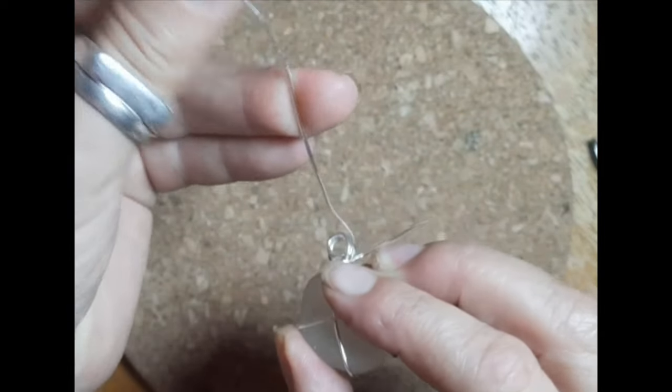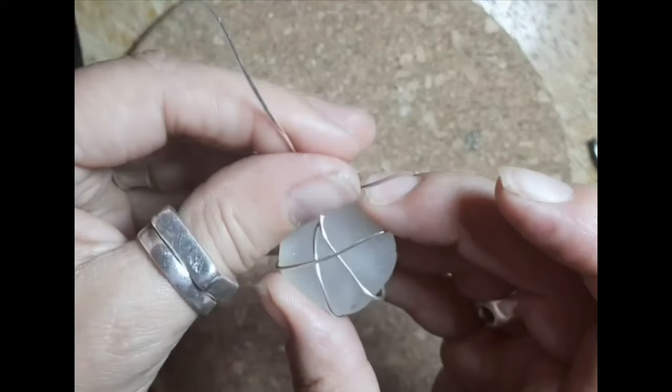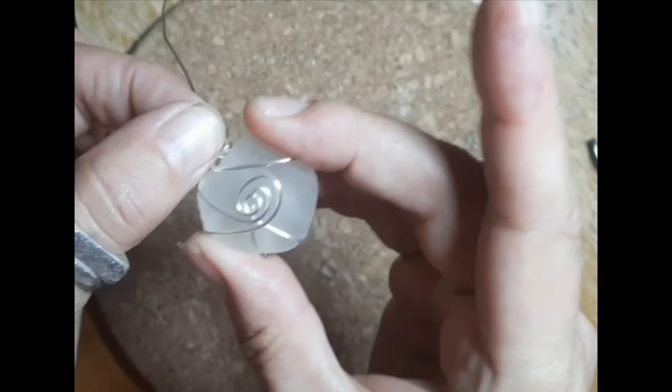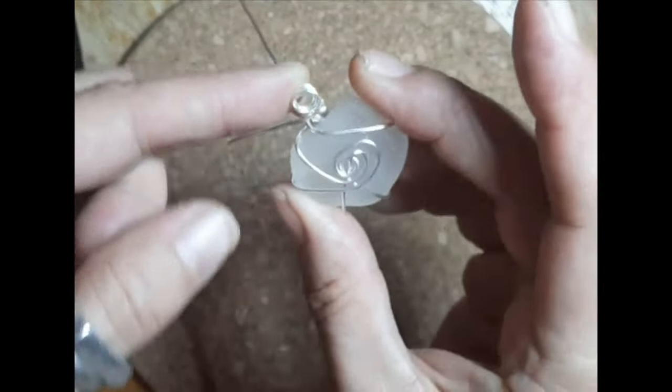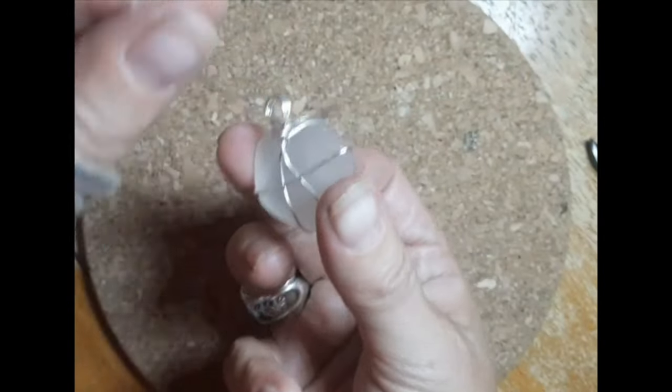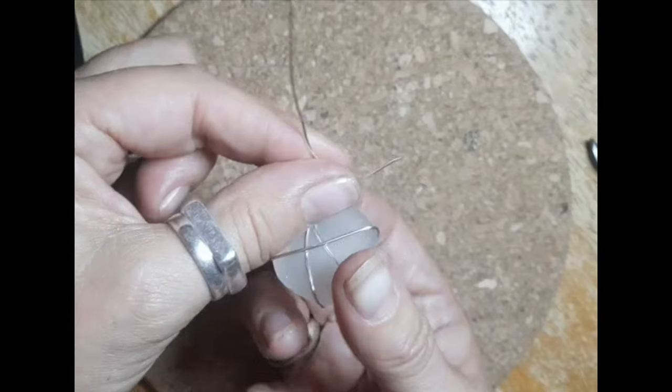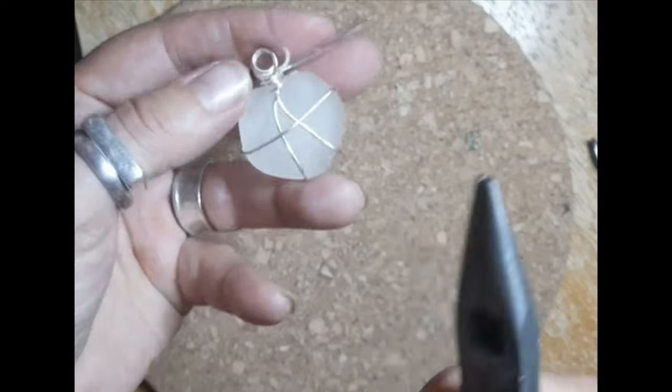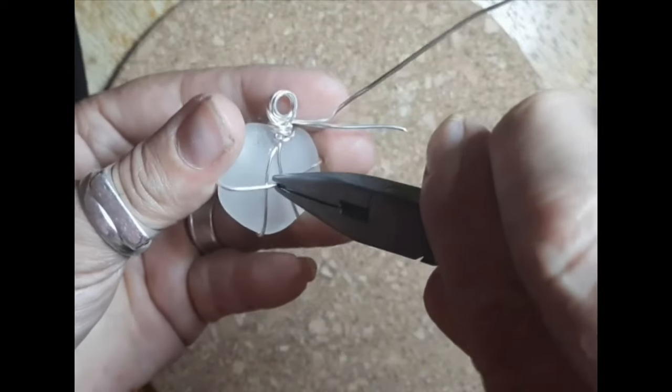At this stage, I sometimes make sure because I still have quite a bit of length here. I want to make sure that this piece of sea glass is not going to go anywhere at all before I finish, just in case I need this bit of extra wire to add more strength.